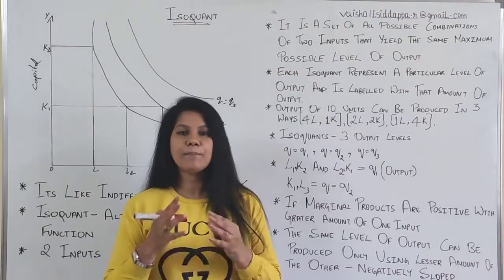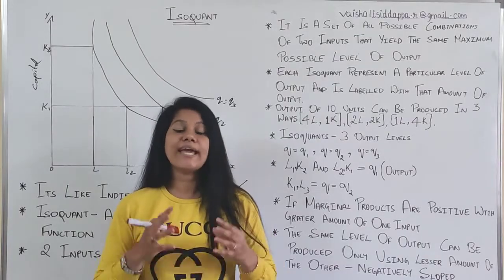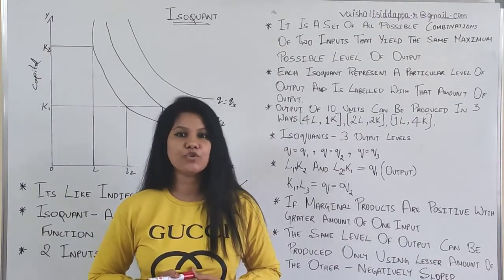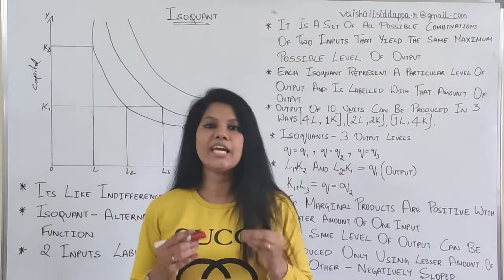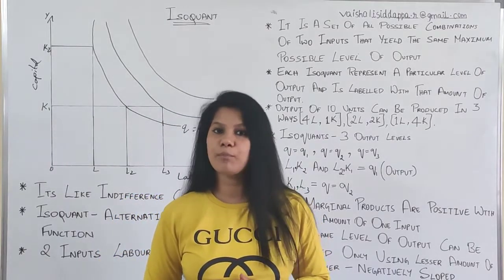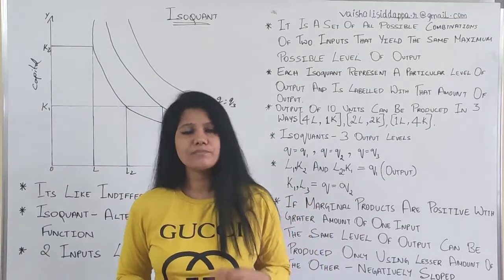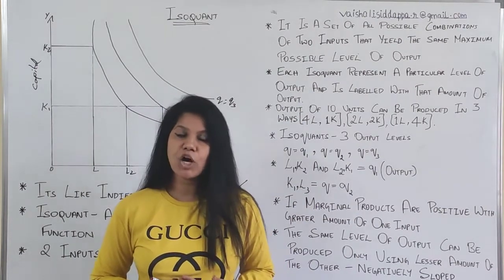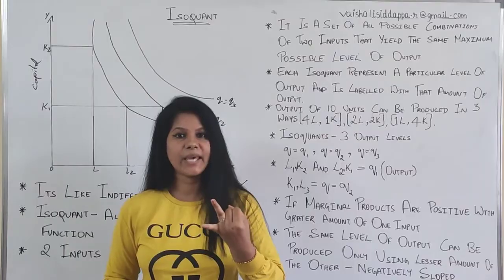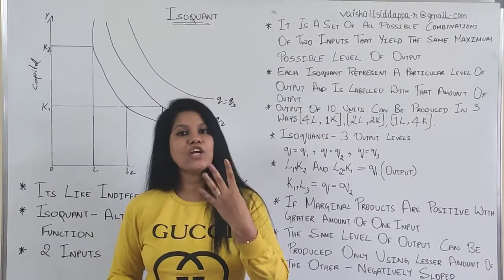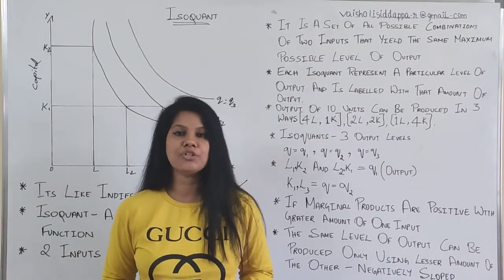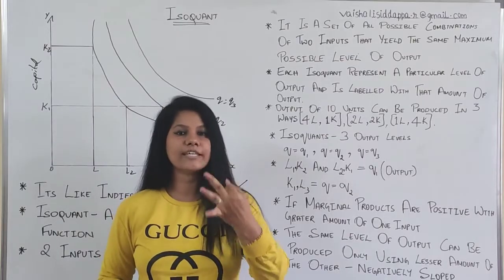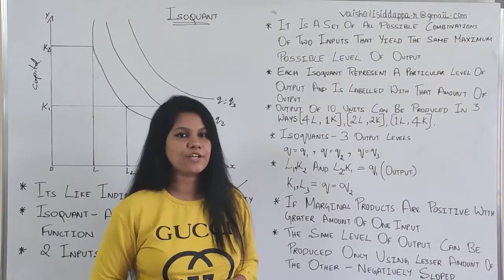If you want to convert input into output — any unfinished goods, raw materials into finished goods — you need inputs. There are four inputs, which we call factors of production: land, labor, capital, and organization. So there are four factors of production: land, labor, capital, and organization.